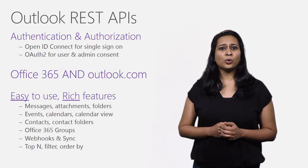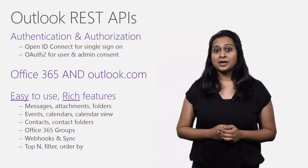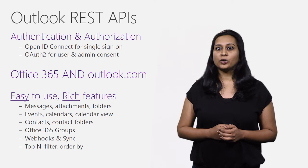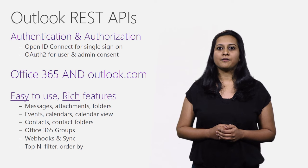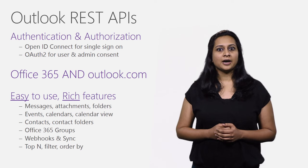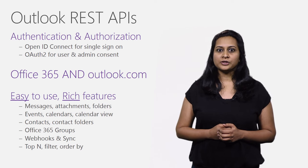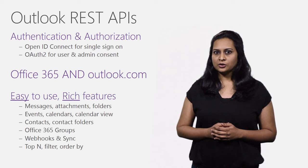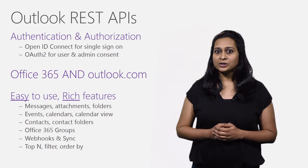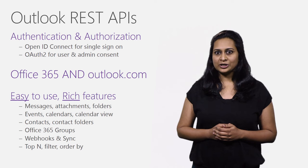As with V1.0, V2.0 also uses industry standards: JSON, OAuth, and OData V4. The Outlook REST APIs are available for Office 365 accounts, as well as Outlook.com accounts upgraded to Office 365 infrastructure. We are in the process of upgrading all Outlook.com accounts, and once that is complete, all 400 million Outlook.com users will have REST APIs enabled.